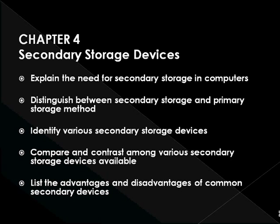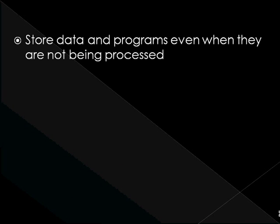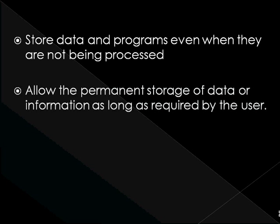Secondary storage is used to store data and programs when they are not being processed. It is more permanent than main memory, as data and programs are retained even when the power is turned off. Storage devices can be classified as primary and secondary. Primary storage devices — that is, RAM — are only used as long as the computer is turned on. Once power goes off, all information in RAM is lost; we call it volatile memory. Secondary storage devices, on the other hand, allow permanent storage of data.